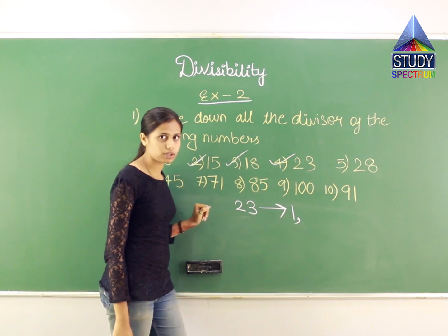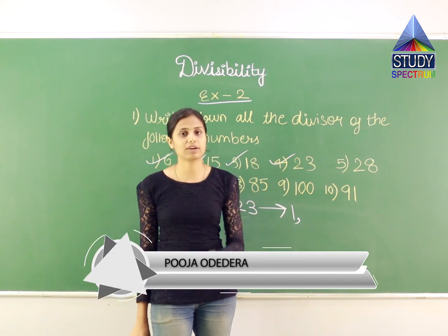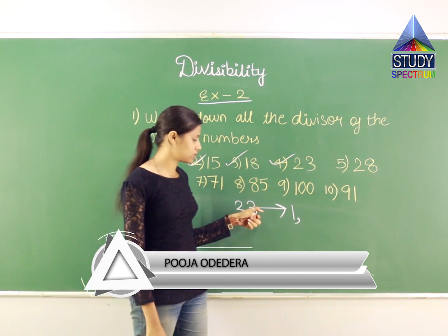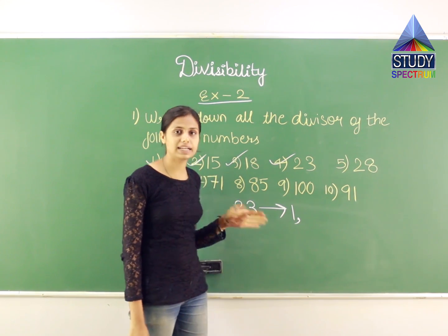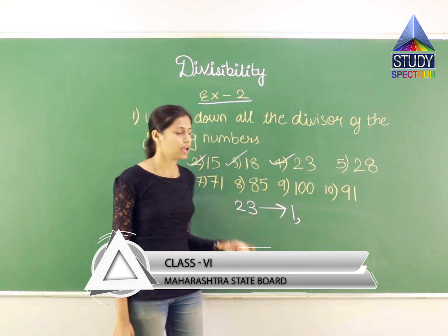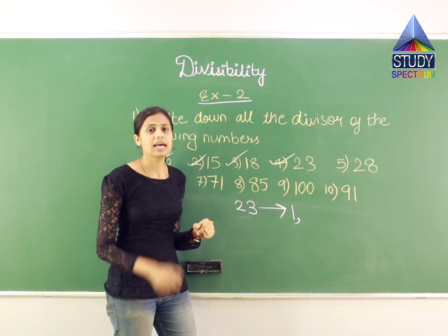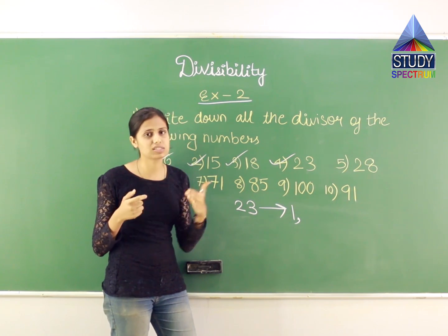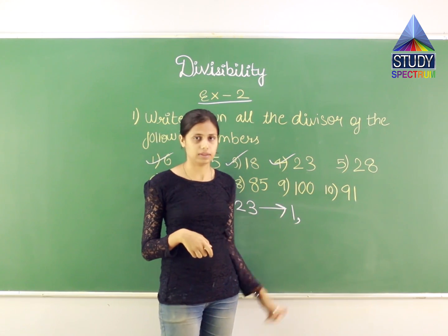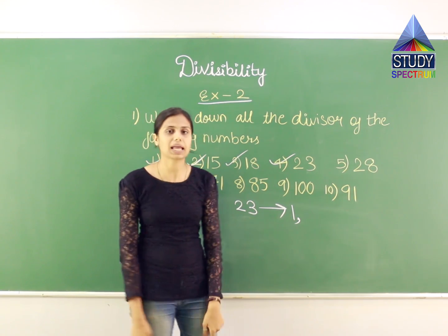For 7: 7×1=7, 7×2=14, 7×3=21 — I don't get 23. So 7 is not a divisor. For 8: 8×1=8, 8×2=16, 8×3=24 — I don't get 23. So 8 is not a divisor. For 9: 9×1=9, 9×2=18, 9×3=27 — I don't get 23. So 9 is also not a divisor for 23. At this point, I still haven't found any divisor except 1.